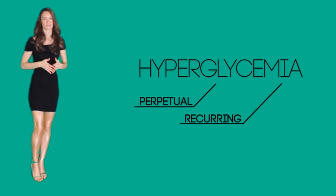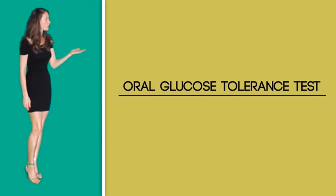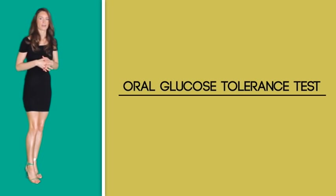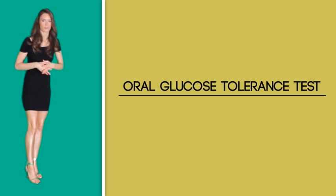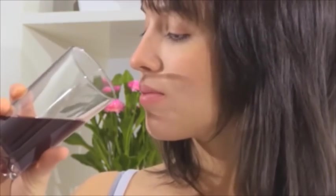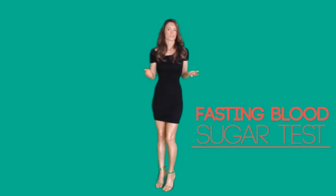Diabetes mellitus is associated with hyperglycemia that can be perpetual or recurring. There are certain tests to detect hyperglycemia. An oral glucose tolerance test requires the patient to fast overnight, after which their fasting blood sugar level is measured. The patient is then given a glucose solution of standard high concentration to drink, and for the next two to three hours blood sugar levels are checked and recorded periodically.